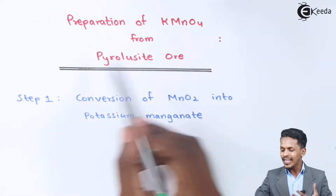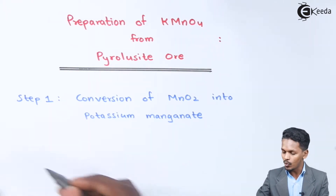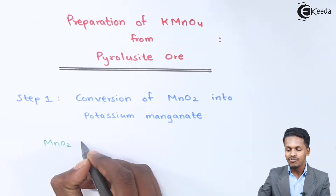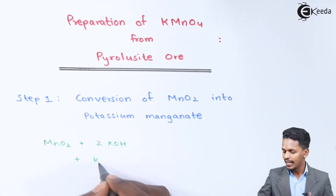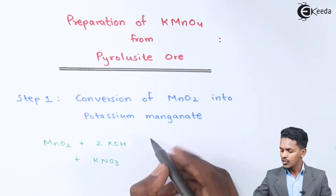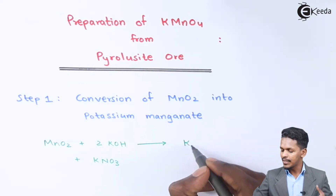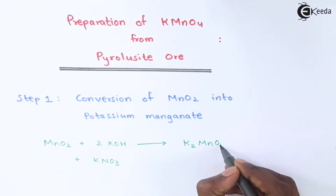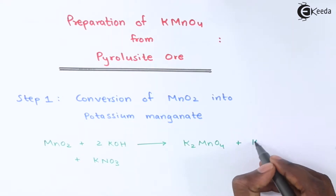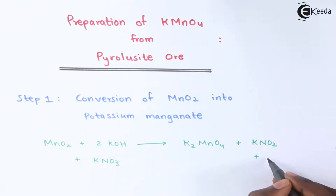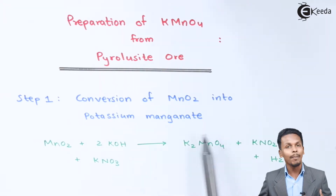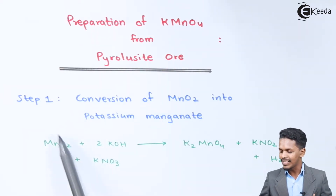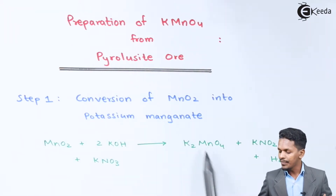In step one, the ore — that is MnO2 — is treated with a base like KOH in the presence of KNO3 (potassium nitrate). Therefore, the product we obtain is K2MnO4 (potassium manganate) along with the by-products KNO2 (potassium nitrite) and water (H2O). The main product obtained here is potassium manganate, so we have successfully converted MnO2 (pyrolusite ore) into potassium manganate.